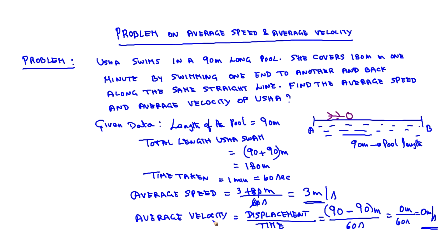So we can find that the average speed is 3 meters per second for Usha, and the average velocity is 0 meters per second.